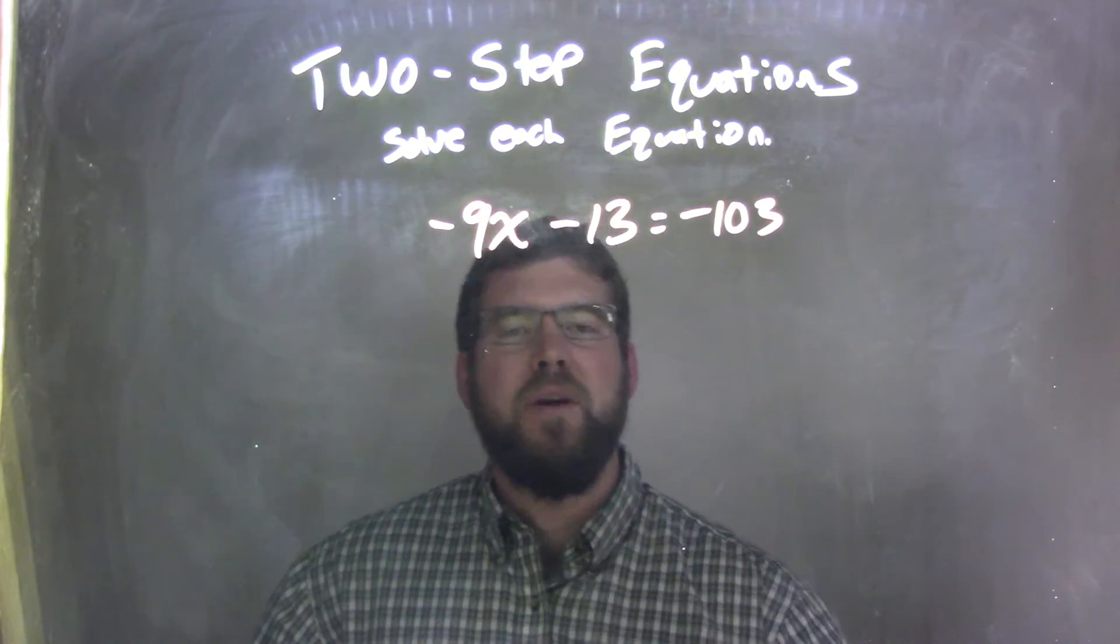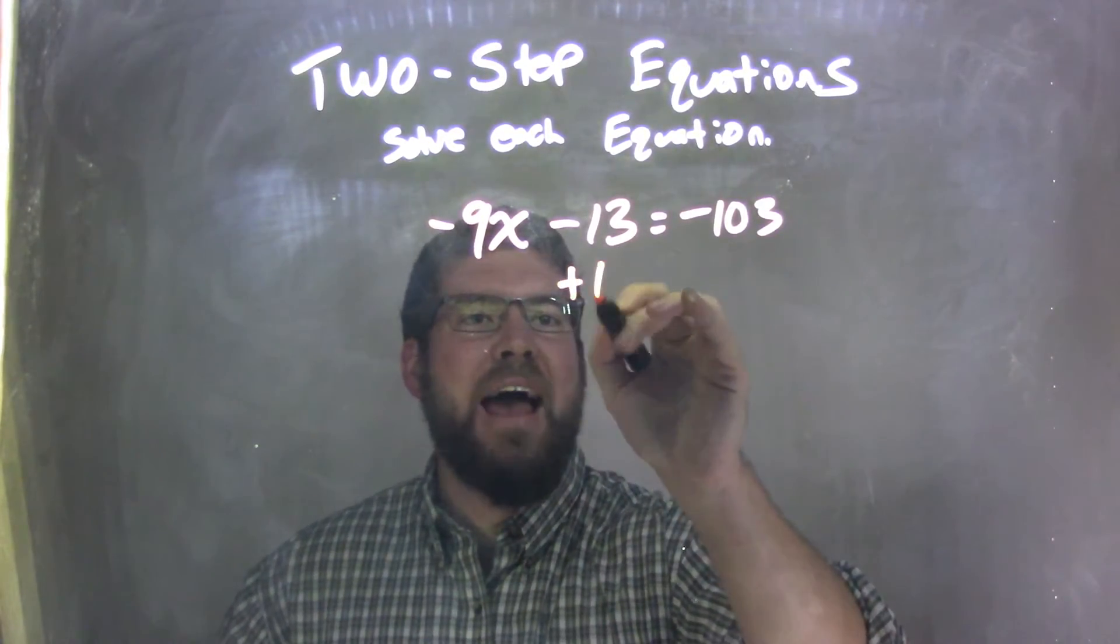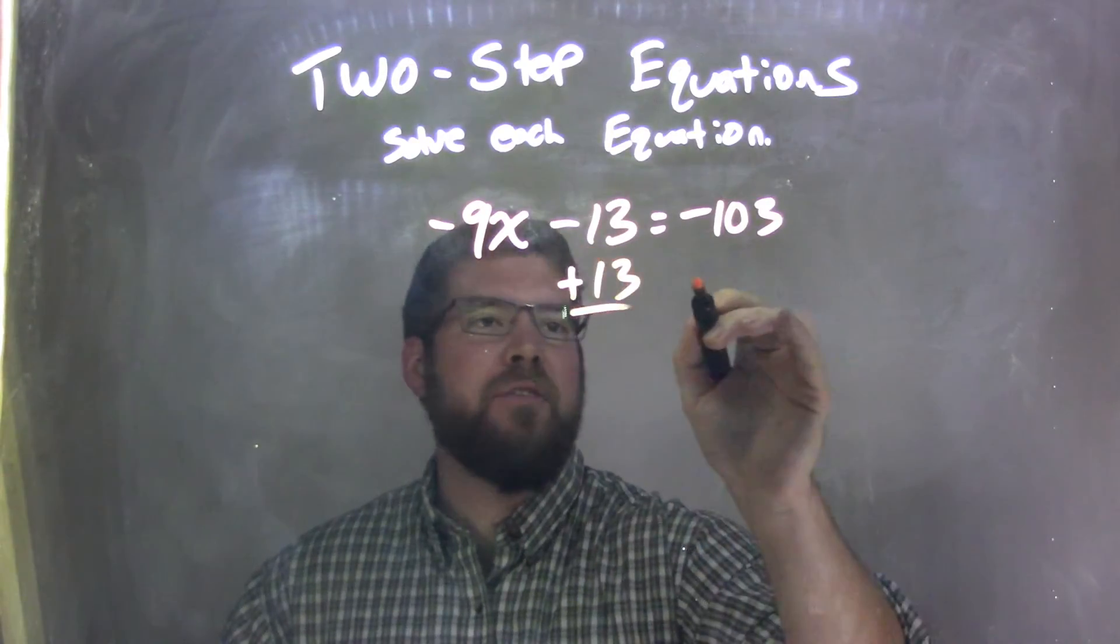Well, first step here is I'm going to add 13 to both sides. I'm going to add 13 because it's the opposite of that subtraction, plus 13.